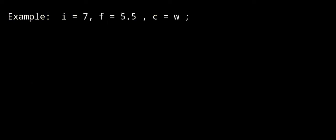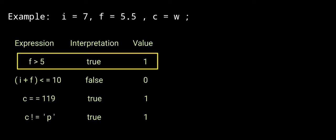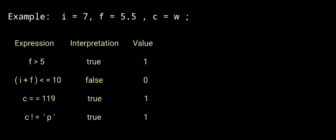Next, three variables: i is the integer variable with value 7, f is the floating point variable with value 5.5, and c is the character variable with value 'w'. First expression: f greater than 5. f value 5.5, so 5.5 greater than 5 — condition true. Interpretation is true, value 1.